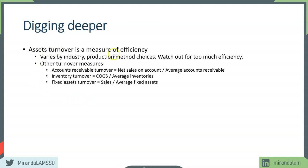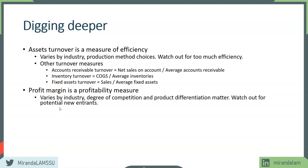Turnover and efficiency measures are one category; the other is profit margin. When benchmarking profit margin, we need to take the industry into account. Typically, a grocery store will have a much lower profit margin compared to a department store. The characteristics vary by industry, as does the level of competition and whether the company chose a cost leadership strategy or a product differentiation strategy.